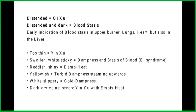Early indication of blood stasis in the upper burner includes the lungs, heart, and also the liver. If the vein is too thin, that is yin deficiency. Swollen, white, and sticky is dampness and stasis of blood. Reddish and shiny is damp heat. If it is yellowish, it's turbid dampness stemming upwards. For white and slippery, that's cold dampness. And dark dry veins indicate severe yin deficiency with empty heat.